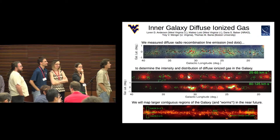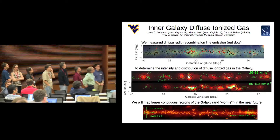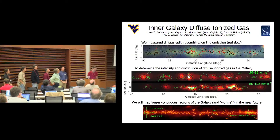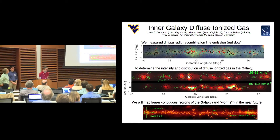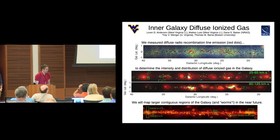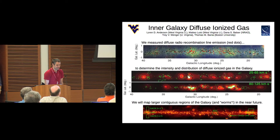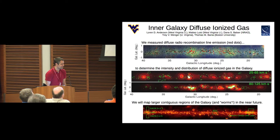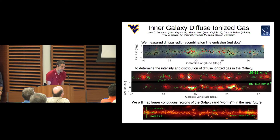In recombination line observations of compact H2 regions in the inner galaxy, 30% of sight lines have two velocity components. In the middle figure, we separated those velocity components into just the diffuse ionized gas, and it's correlated in those two velocity ranges, and also with diffuse 8 micron emission. We believe we can map significant parts of the warm ionized medium with the GBT and recombination lines.